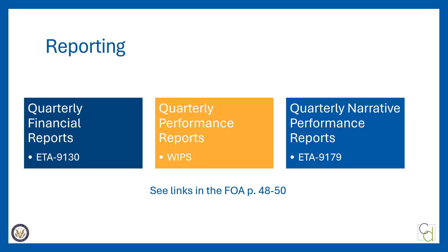Through WIPS you'll be asked to report demographics, services, and outcomes. Review the information on pages 48 to 50 of the FOA, which provides details on reporting as well as links to tools and resources. While this doesn't necessarily affect your application directly, you will need the human capital to collect, maintain, and report on detailed information for all of your participants — be sure you're considering that from a budgeting and organizational capacity standpoint.